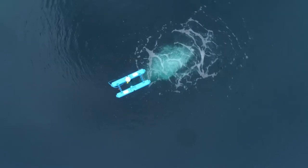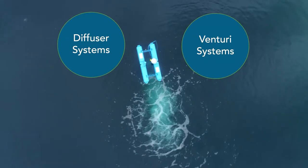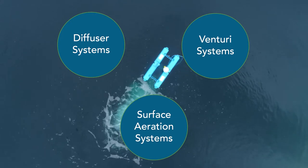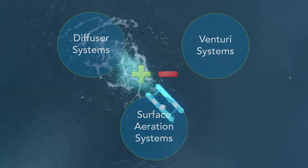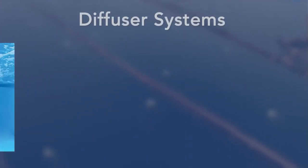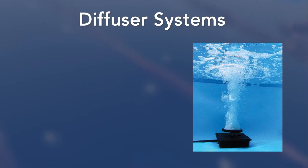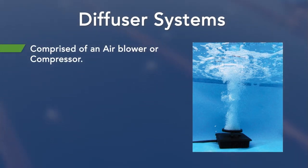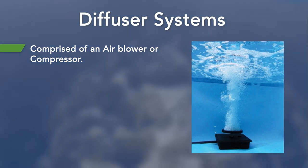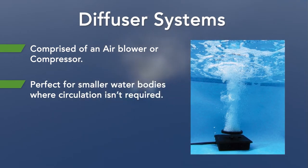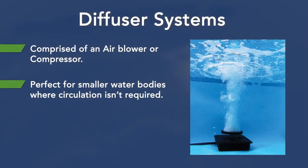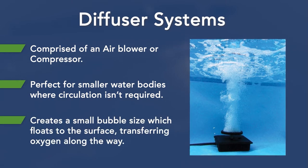There are many types of aeration devices, but the most common are diffusers, venturi systems, and surface aeration systems. Each of these systems has its own positive and negative aspects and suits different applications better than others. So let's take a walk through it all together. Diffuser aeration systems generally comprise an air blower or compressor with a hose running out to a diffuser station. Diffusers are an effective way to introduce oxygen in small-scale water bodies where very little circulation is required. These systems create a small bubble size which floats to the surface, transferring oxygen through the water along the way.